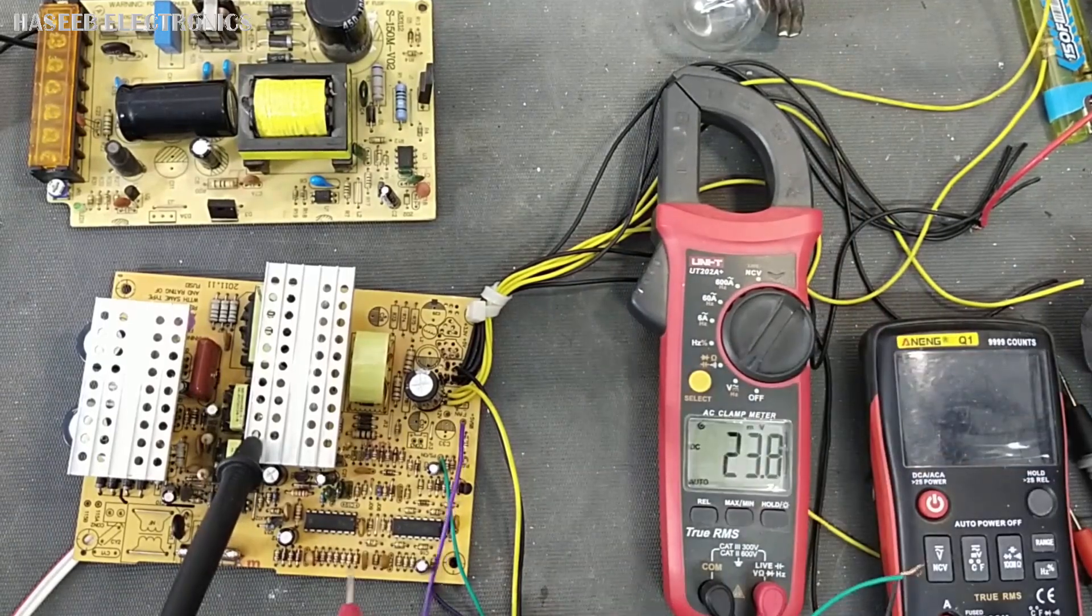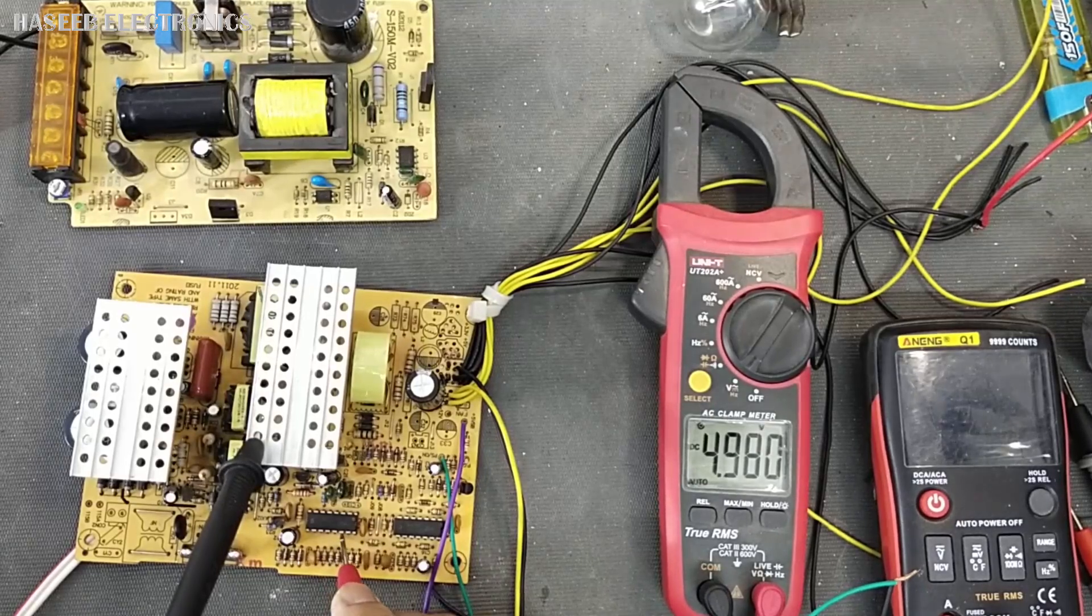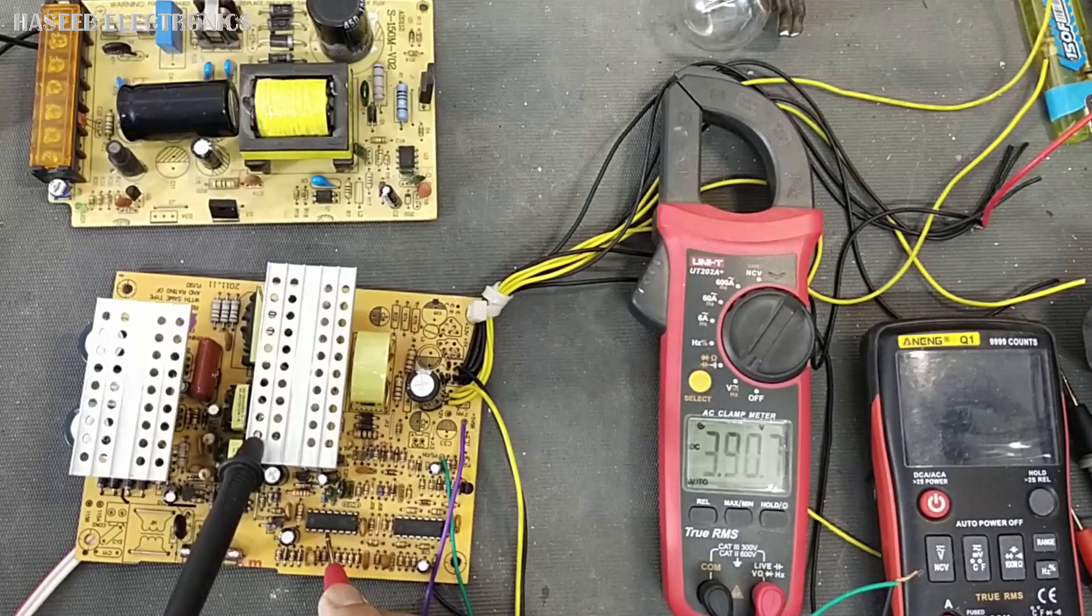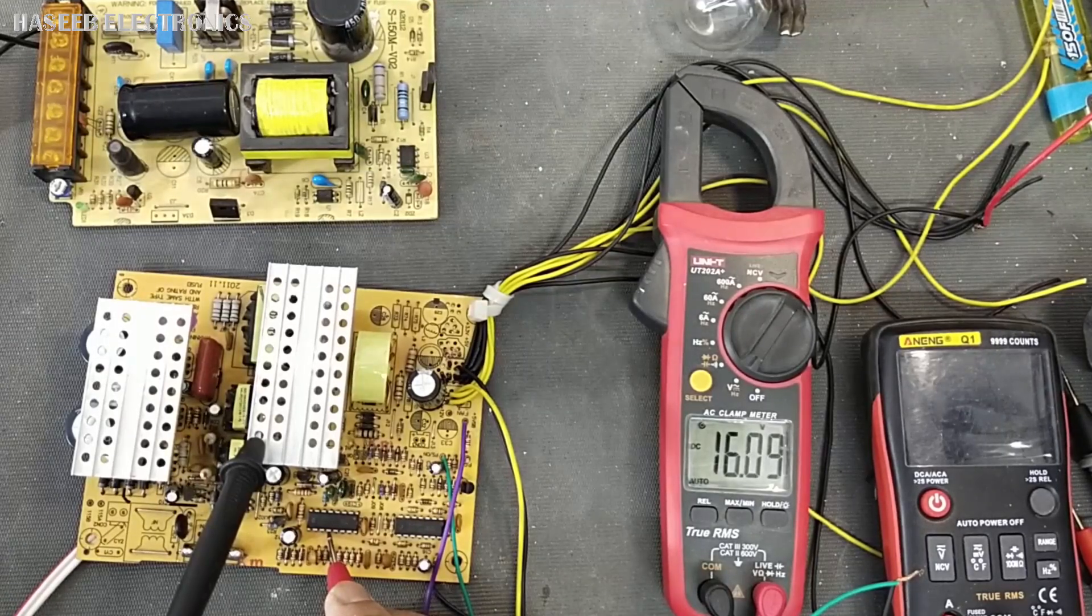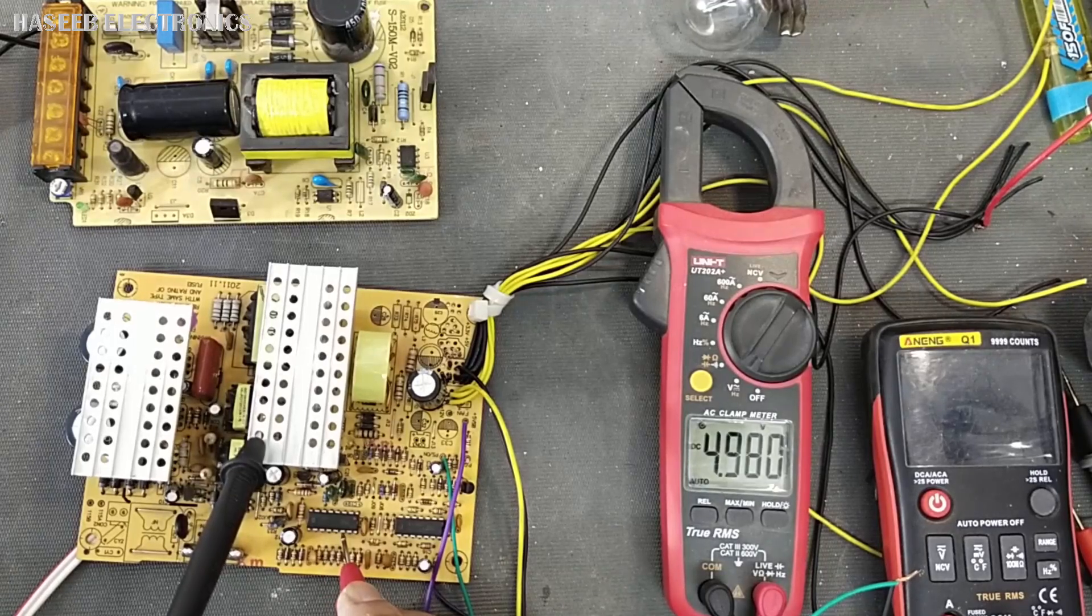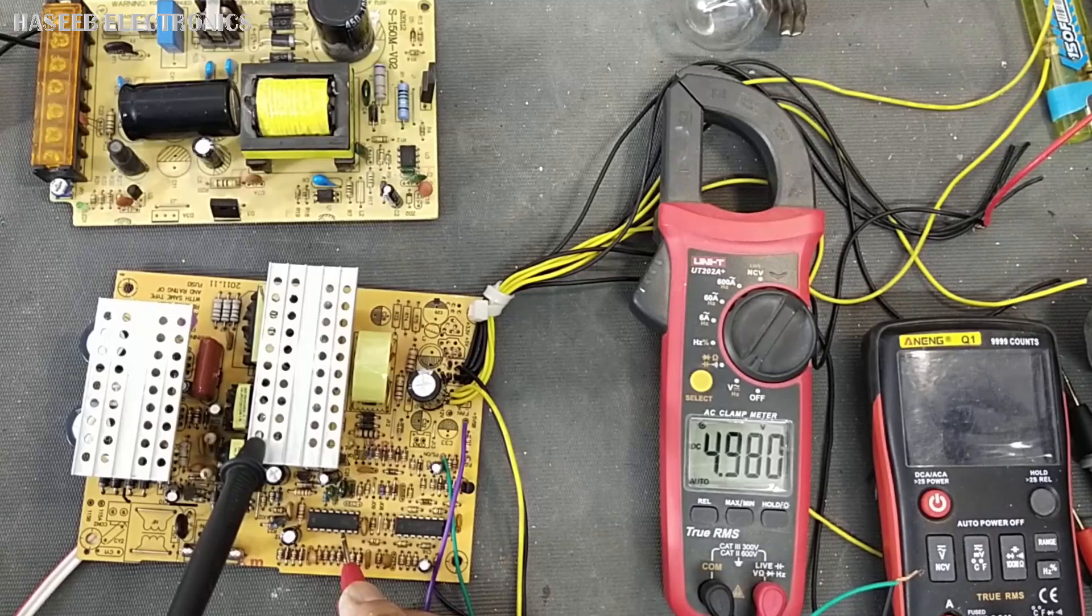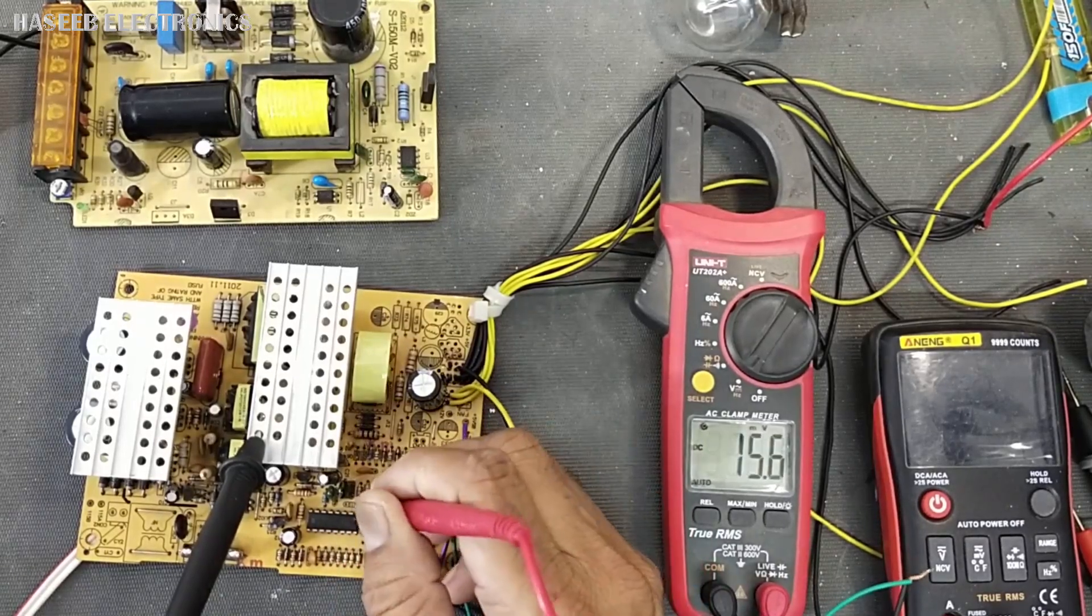DC voltage at pin number 14. Here must be 5 volt. Pin number 12 is supply voltage. It is 16 volt. 16 volt available. Then we need 4.9 volt. That is 5 volt. That is reference voltage. It must generate 5 volt reference and then we must verify pin number 4.